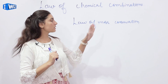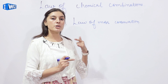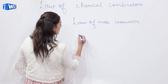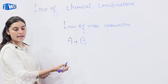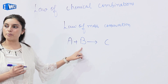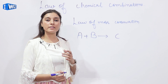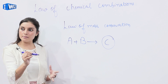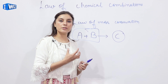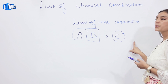The Law of Mass Conservation states that in any chemical reaction, when reactants react together to give a chemical product, the masses of the reactants and the masses of the products remain the same. If element A combines with element B to give product C, the mass of A and B combined will equal the mass of compound C.